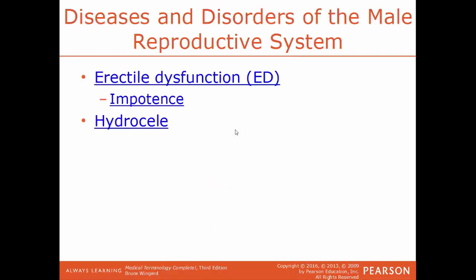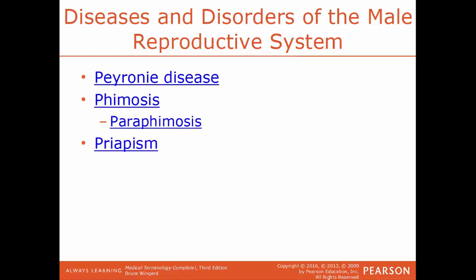ED, erectile dysfunction, is a condition where the male has an inability to maintain an erection sufficiently. A form of erectile dysfunction is impotence, where the male cannot achieve or maintain an erection, or the ability to ejaculate. Hydrocele is an accumulation of fluid within a body sac — for this system, it refers to the buildup of fluid around the testicle. Peyronie disease is a condition where fibrous scar tissue develops inside the penis, giving it a curved and painful erection.